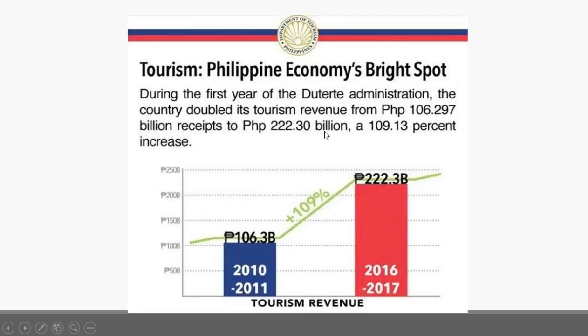Let's take a look at another example of misleading data. Ito yung isa sa mga graphs na ni-release ng Department of Tourism noong 2017 SONA. Napakita nitong graph na to na may 109% increase in tourism revenue nung first year nung present administration versus nung nakaraang administrasyon.